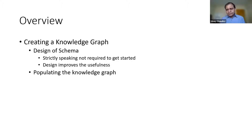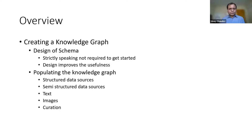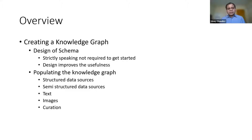The information that goes into a Knowledge Graph could come from any number of sources: structured data sources, semi-structured data sources, NLP over text, computer vision techniques, or old-fashioned data curation by typing it in. We will look at many of these techniques in the next two sessions, but for today I'm going to primarily focus on the design of the schema of the Knowledge Graph.